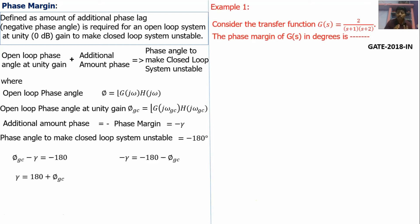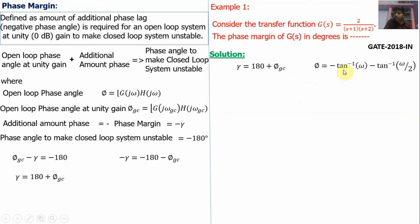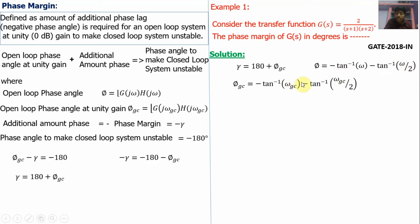Now the first problem: we have to calculate the phase margin. The transfer function of the system is given — this question is asked in GATE 2018. We know that phase margin PM equals 180 plus ∠G(jω_gc). To find the phase margin, we first need the phase angle at the gain crossover frequency. The phase angle for this transfer function is minus tan⁻¹(ω) minus tan⁻¹(ω/2).